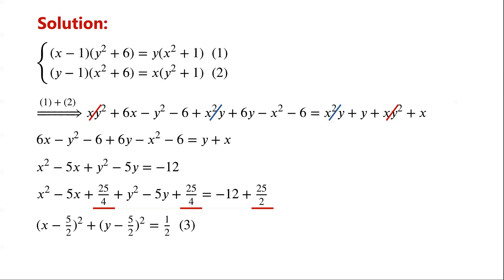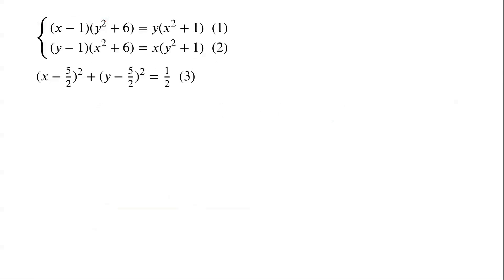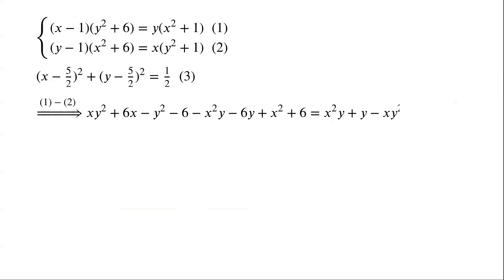Now we subtract equation 2 from equation 1. We have: XY² + 6X − Y² − 6 − X²Y − 6Y + X² + 6 = X²Y + Y − XY² − X.